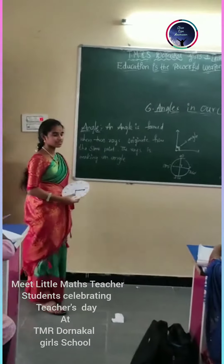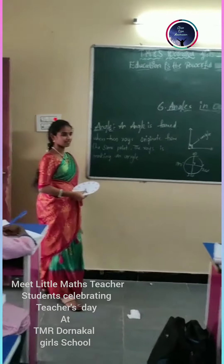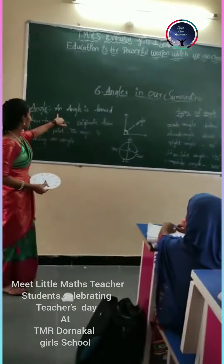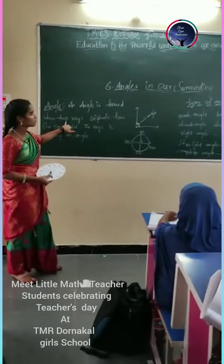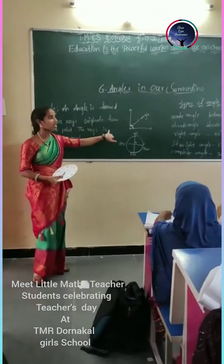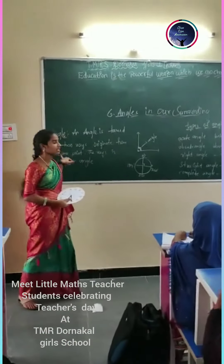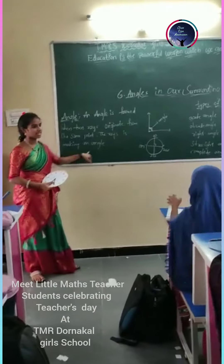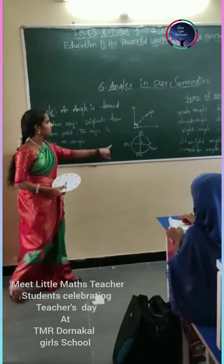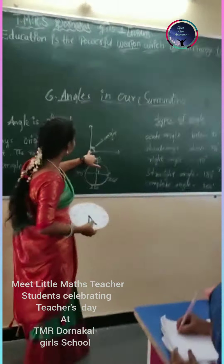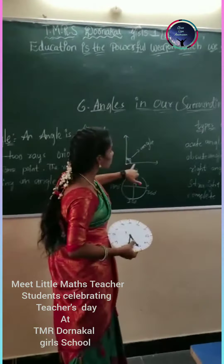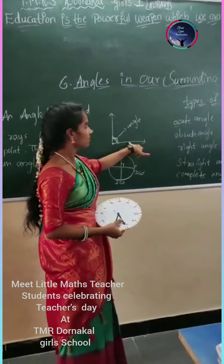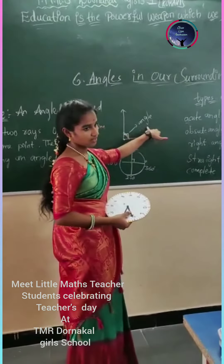Do you know what is meant by angle? An angle is formed when two rays originate from the same point. See here — this is the point, the two rays are originating, and the angle is forming.